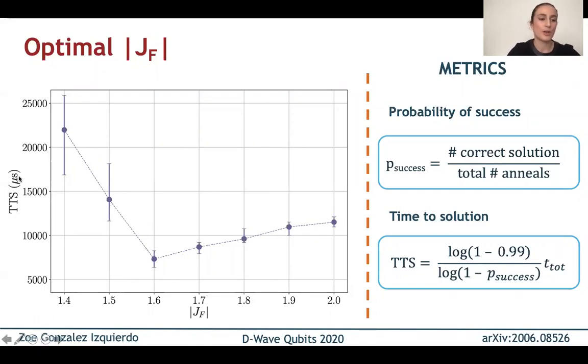So in this plot, we show the time to solution in microseconds for a range of different jferro. And our data points are the median of bootstrap over many instances, and the error bars correspond to the 35th and 65th percentiles. We find that -1.6 gives us the optimal TTS, and that when we decrease the magnitude of JF, the time to solution becomes worse. This is because when the ferromagnetic coupling is not very strong compared to the problem couplings, it is more likely that the low-lying energy states are densely populated by states with an inconsistent vertex model.